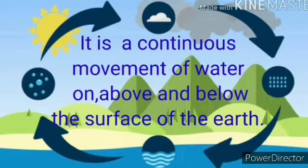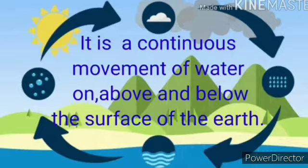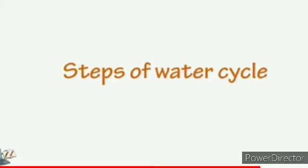The water cycle is all about how clouds are formed and how rain forms. It is a continuous movement — a circulation of water from the Earth's surface to the atmosphere and back to the Earth. It is a continuous movement of water on, above, and below the surface of the Earth.